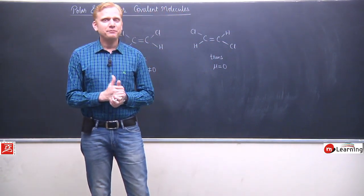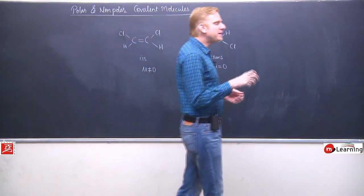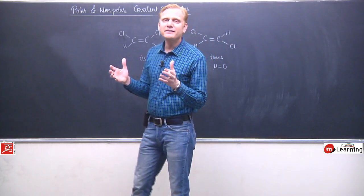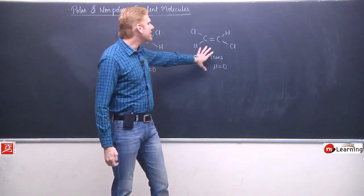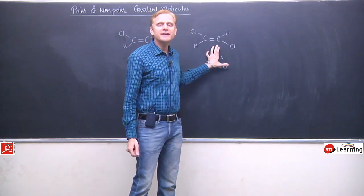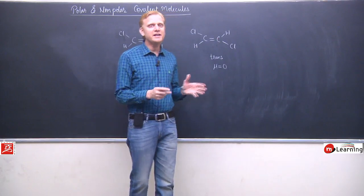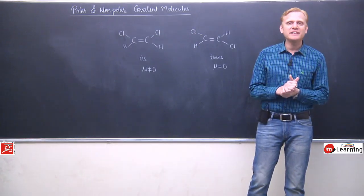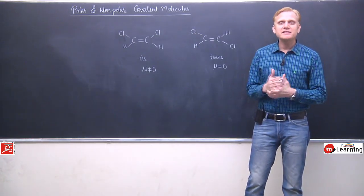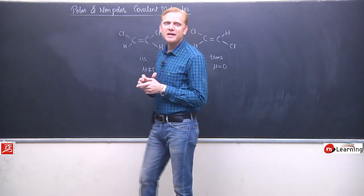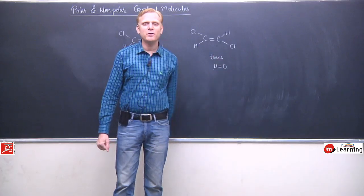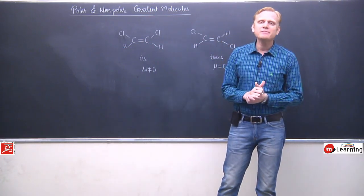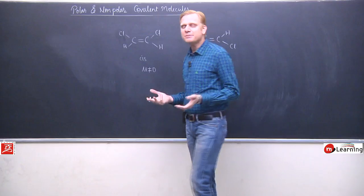But then an interesting thing is, when we talk about melting point, melting point also depends on the arrangement or close packing in the solid structure, in the crystal structure. Usually trans isomers fit better into the crystal lattice. Trans structures fit better in the solid structure that forms. They are more closely packed, in better arrangement. Due to this, when you compare melting point, trans isomer will have a higher melting point.